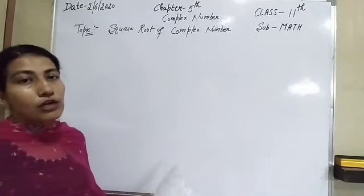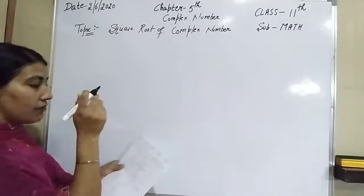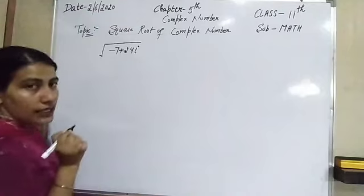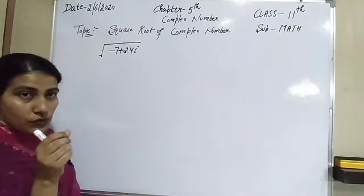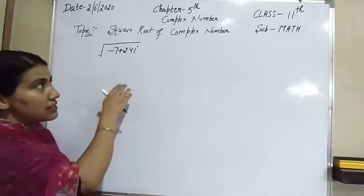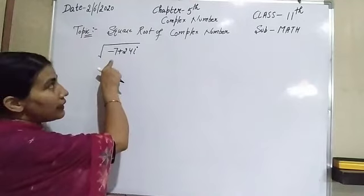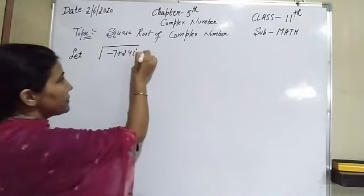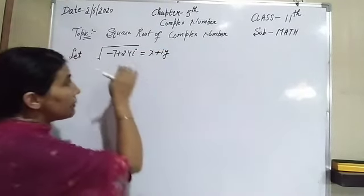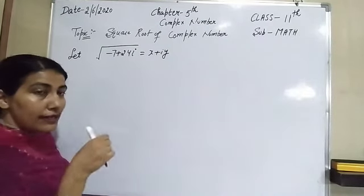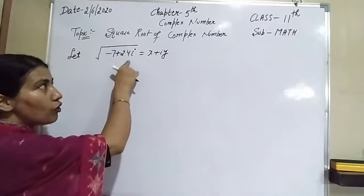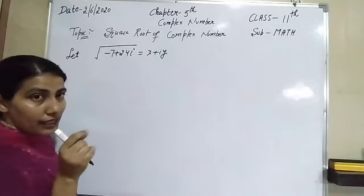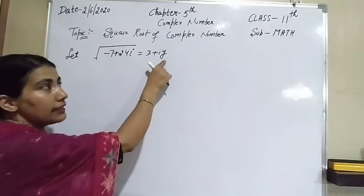Let us suppose we have a complex number minus 7 plus 24i, and we have to find its square root. We take its square root equal to x plus iy, because the square root of a complex number always gives a complex number. So our main motive is to find the value of x and y.